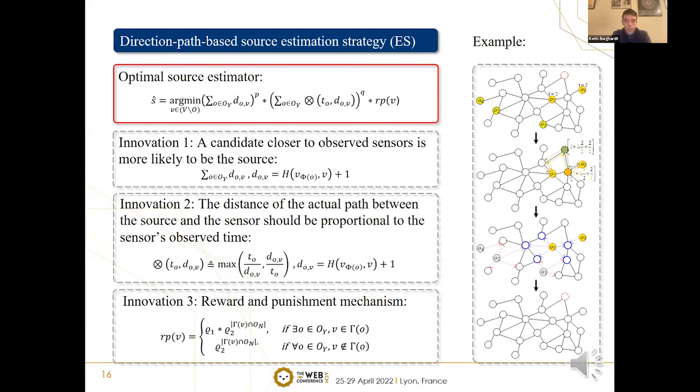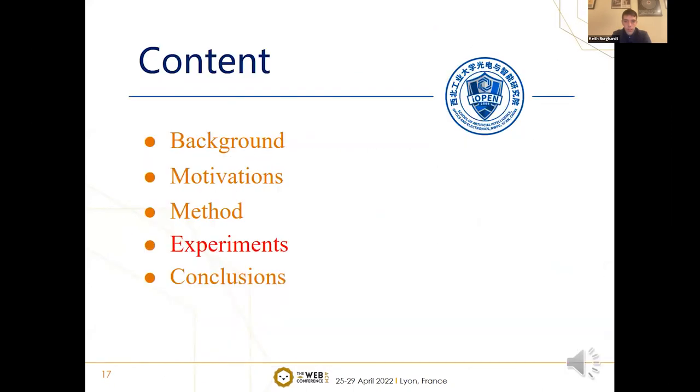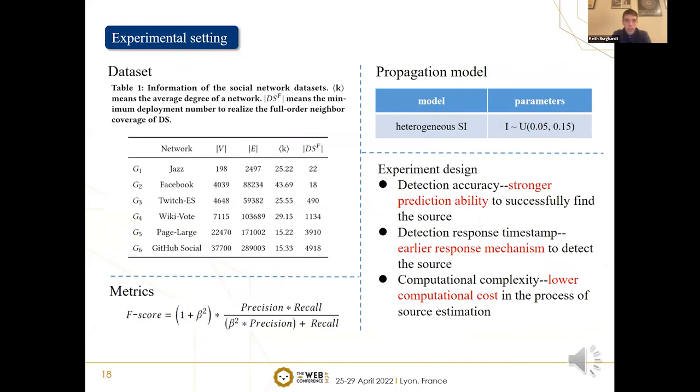Next, I'd like to present our experiments. Before that, I would describe the experimental setting. The experimental datasets I use include six real-world datasets. And to perform the prediction ability of the localization method more rigorously, we use F-score as the performance metric instead of accuracy.